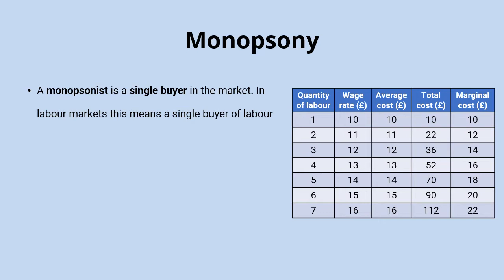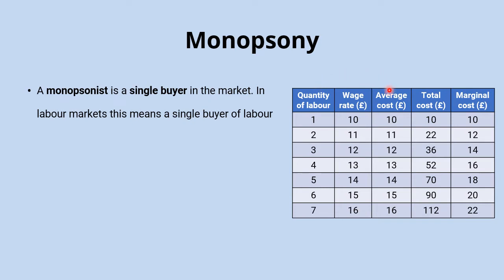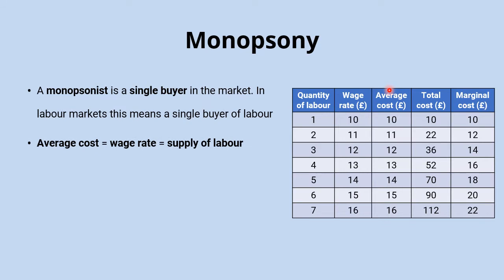We're going to start by looking at the different costs to the firm of employing labour using a simple table. We have the quantity of labour on the left, then the wage rate, and then the total cost, calculated by quantity of labour multiplied by the wage rate. Once we have the total cost, we can calculate the average cost by dividing total cost by the quantity of labour, and the average cost turns out to be the same as the wage rate.